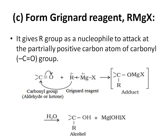The third method for preparation of alcohols is from Grignard reagent. An important one-mark question: Grignard reagent is commonly represented by the formula RMgX, where R is your alkyl group, Mg is magnesium, and X is halogen. Chemically, Grignard reagent is alkyl magnesium halide. Using this reagent, we are going to prepare alcohol. It provides an R group as a nucleophile to attack the partially positive carbon atom of the carbonyl group (C=O).